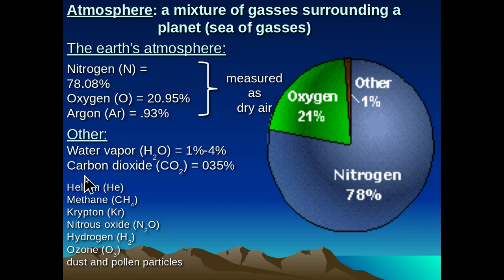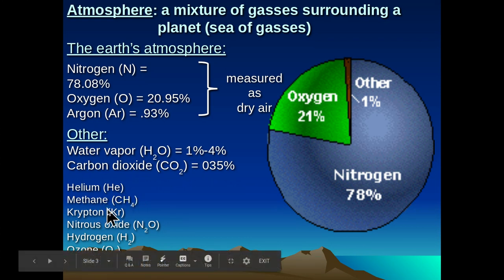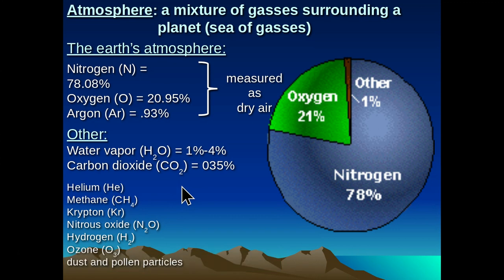Another type of compound found in our atmosphere, which is part of the greenhouse gases, is carbon dioxide, representing about 0.035% of the atmosphere. Some other types of components found in the atmosphere include helium, methane, krypton, nitrous oxide, hydrogen, and of course ozone, which we'll spend some time discussing. For the San Joaquin Valley and those of us living in Bakersfield, we certainly also have a concentration of dust and pollen particles within our atmosphere.